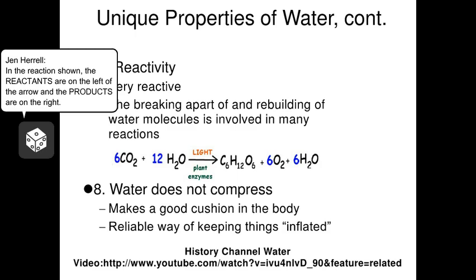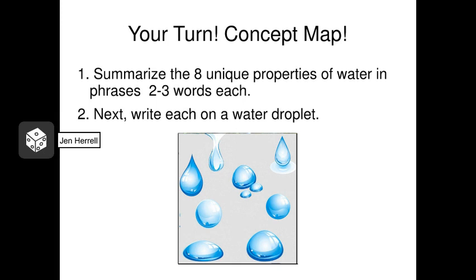Here's your turn for you to complete in your notes. Here we have a concept map. On this concept map there are eight water droplets and what I want you to do is to summarize the eight properties of water, one on each water droplet. So try to summarize it in one, two, three words maybe. Keep it maybe a really short phrase and then write that over those eight droplets. It seems silly but it may help you remember it a little bit better. Just a little more reinforcement.